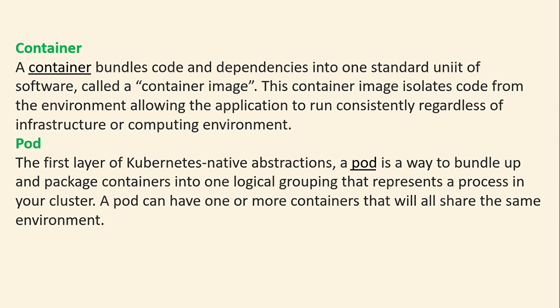A container bundles code and dependencies into one standard unit of software called a container image. The container image isolates code from the environment, allowing the application to run consistently regardless of infrastructure or computing environment. Pods — the first layer of Kubernetes native abstraction — are a way to bundle and package containers into one logical grouping that represents a process in your cluster. Pods can have one or more containers that all share the same environment.